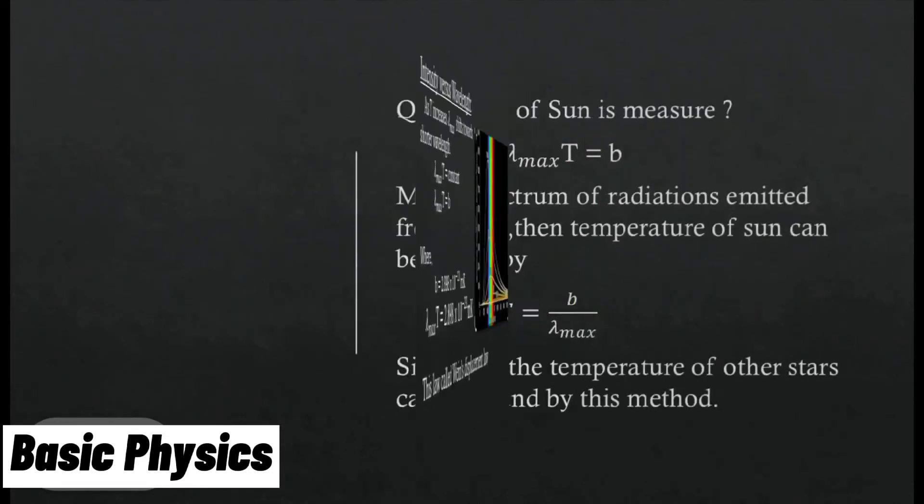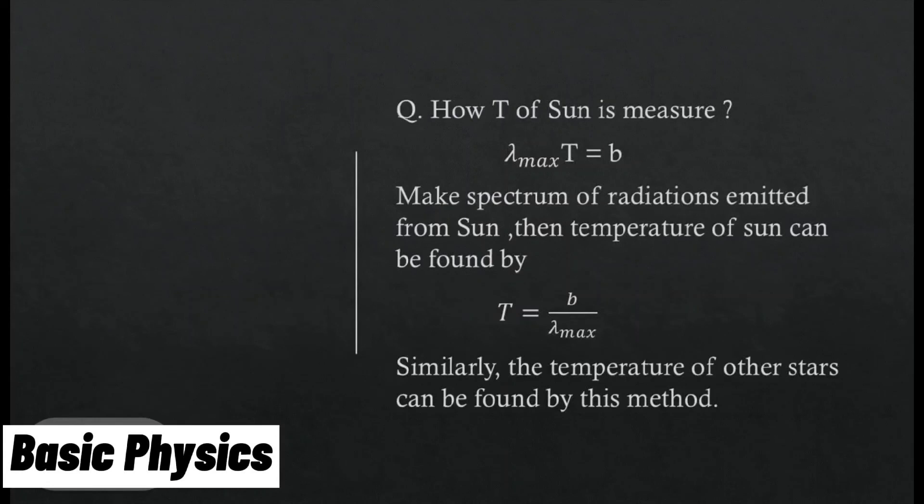How temperature of sun can be measured. Make spectrum of radiations emitted from sun to earth. The temperature of sun can be found by T equals B divided by lambda maximum. Similarly the temperature of other stars can be found by this method.